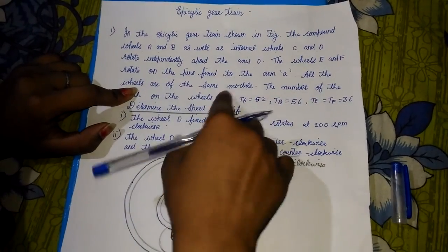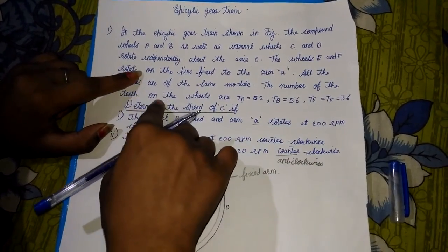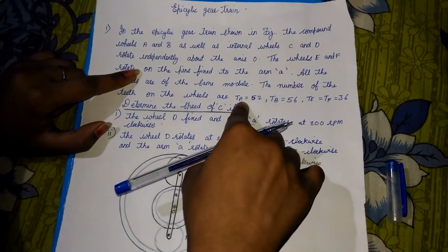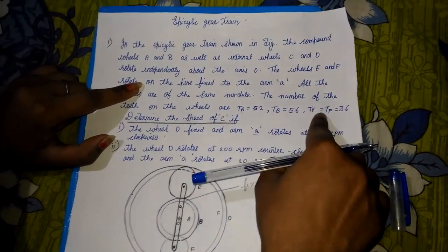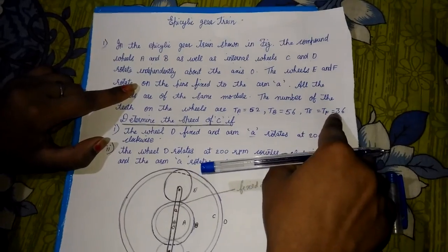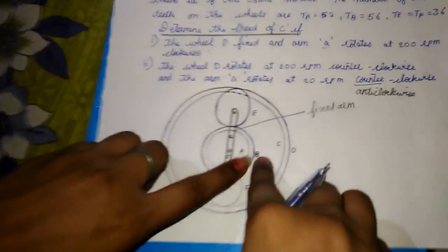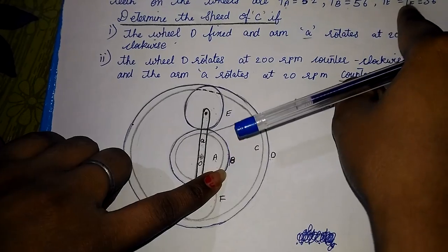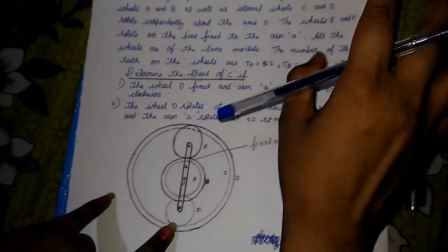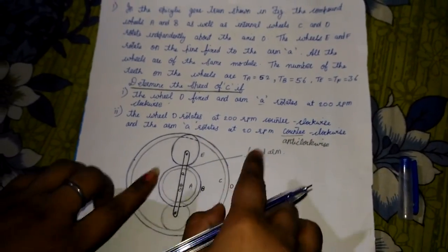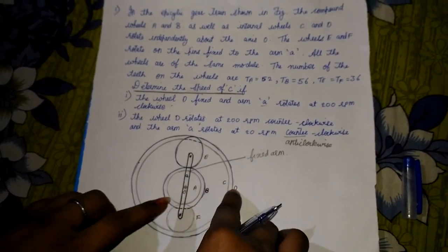All the wheels are of the same module. The number of teeth on the wheels are: teeth of A is 52, teeth of B is 56, and teeth of E and F are both 36. We have been given teeth of A, teeth of B, and teeth of E and F. Now we need to find teeth of C and teeth of D.